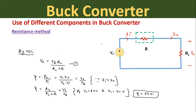If we want to find the efficiency of this circuit, it equals output power upon input power. Output power formula is V0 times I0, and input power formula is Vs times Ii. Since this is a series circuit, the input current equals the output current, so they cancel out and we get efficiency equal to output voltage upon input voltage Vs. From this equation, output voltage upon source voltage equals RL divided by (RL plus R).